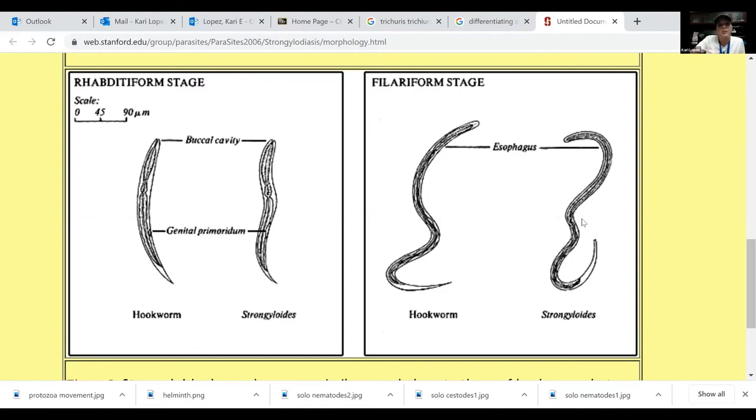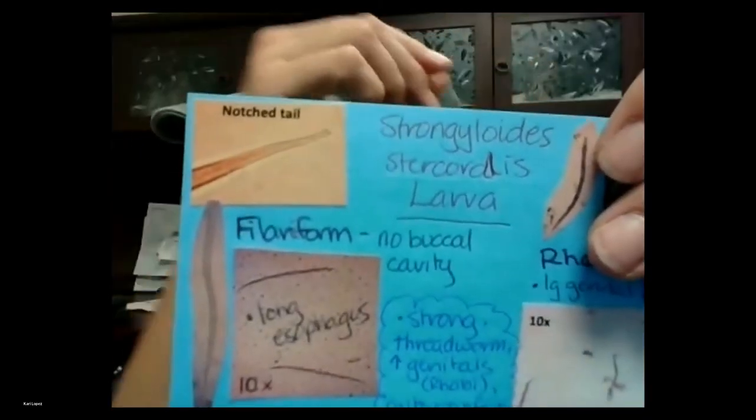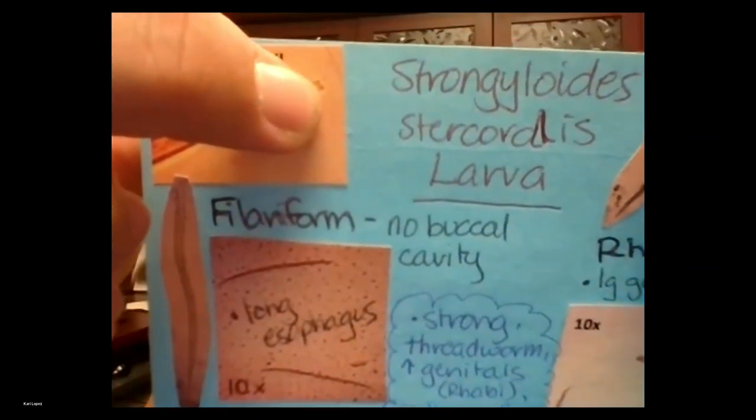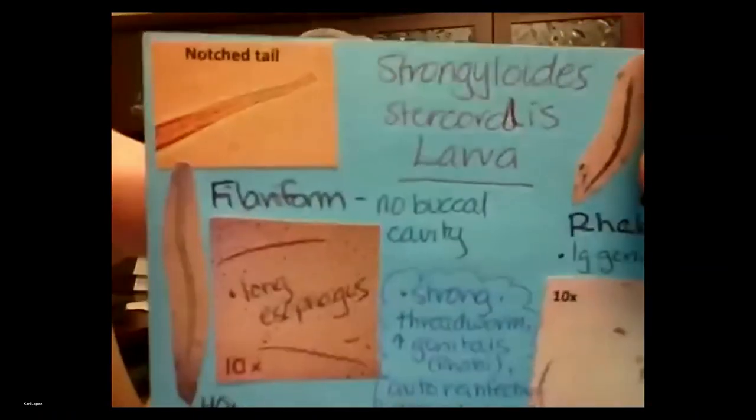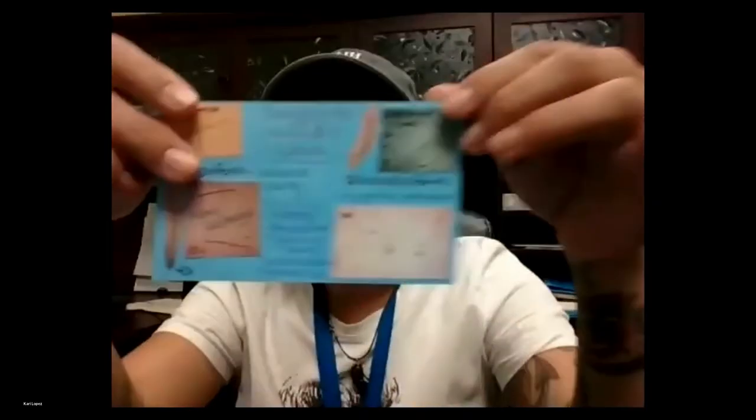I showed you another picture but let me pull it up again. It's on the rabbi. This was on the filariform. So filariform, the strongoloides has a notch tail, so it's not pointy, it's got a little notch in it and it looks like a thread compared to your hookworm, where did he go, who has a pointy tail.